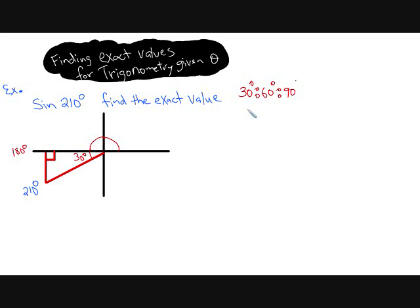Opposite to the 30 degrees, we have the value of 1. Opposite to the 60 degrees, we have a value of square root of 3. Opposite to the 90 degrees, we have a value of 2.